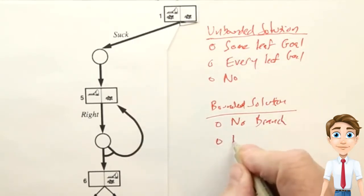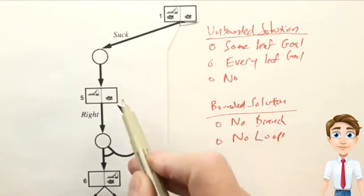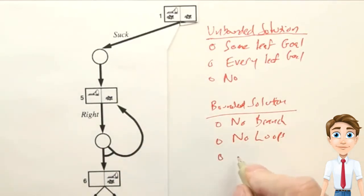Or a plan that has no loops in it, like this loop that goes back to a previous state? Or is there no guarantee that we have a bounded solution?